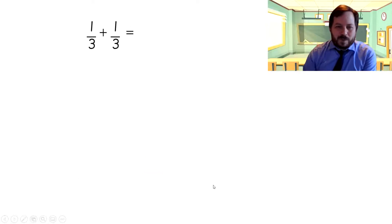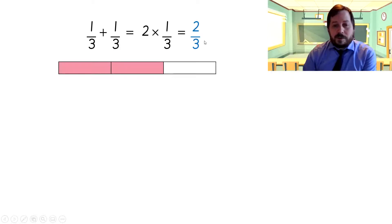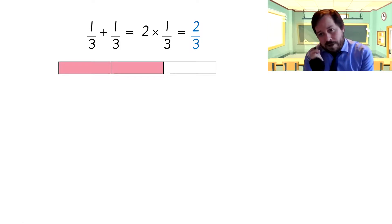Let's have a look again. So one-third plus one-third is two times one-third. So I've got two of them. Two times one. It's two. So it's two-thirds. We don't do anything with the denominator. We just times the integer by the numerator.